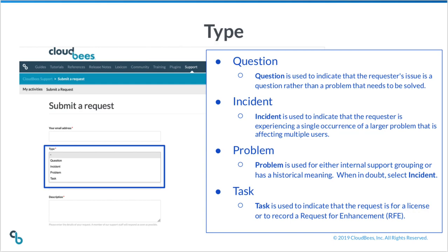There are four types of requests. Question is used to indicate that the requester's issue is a question rather than a problem that needs to be solved. Incident is used to indicate that the requester is experiencing a single occurrence of a larger problem affecting multiple users. Problem is used for either our own internal support grouping or has some historical meaning. When in doubt, select incident. Task is used to request a license or to record a request for enhancement, or RFE.